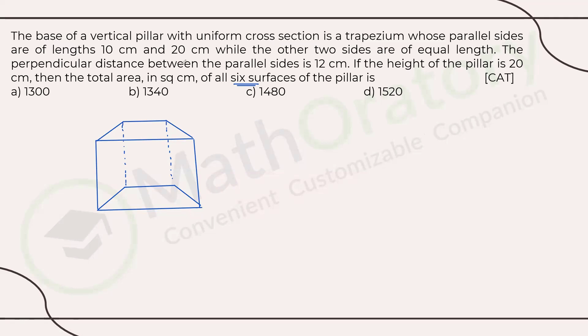The more important thing is the trapezium, because most of the information is related to it. Let me draw the trapezium separately. So this is the base of the pillar, the trapezium. We have one side as 10 centimeter, the other as 20 centimeter. We know that this side is equal to this side, the other two sides are equal in length. Also, we know that the perpendicular distance between the two parallel sides is 12 centimeter. So if I draw a perpendicular here, this would be 12 centimeter.